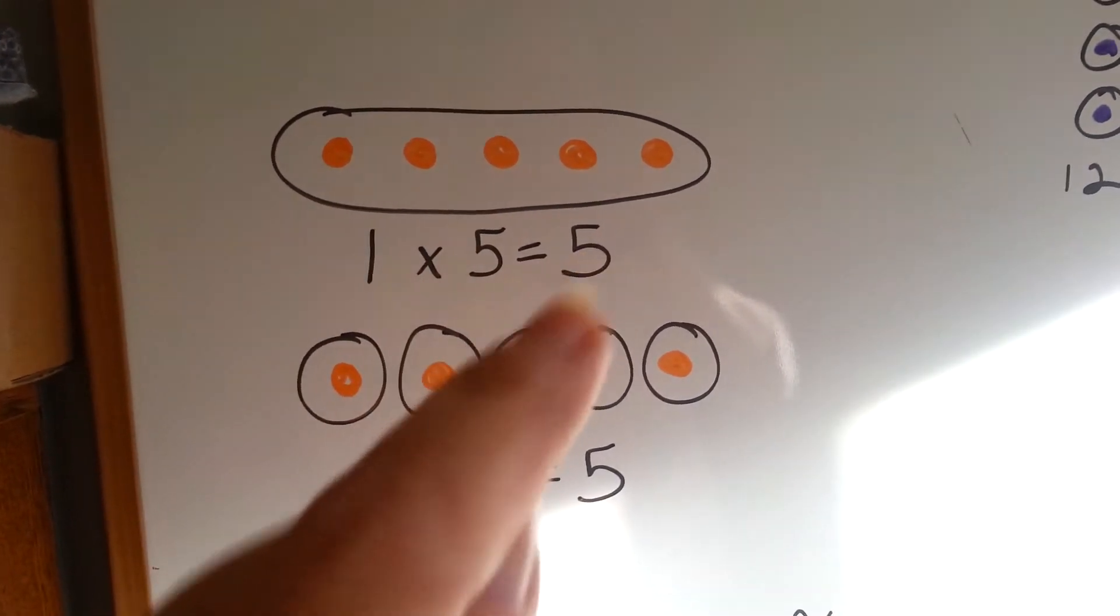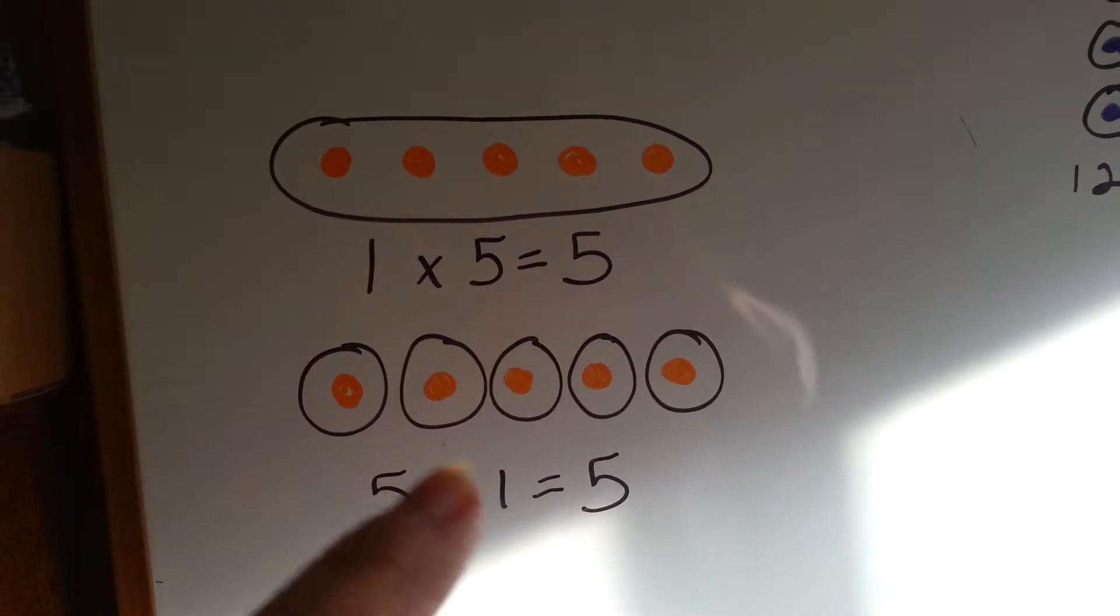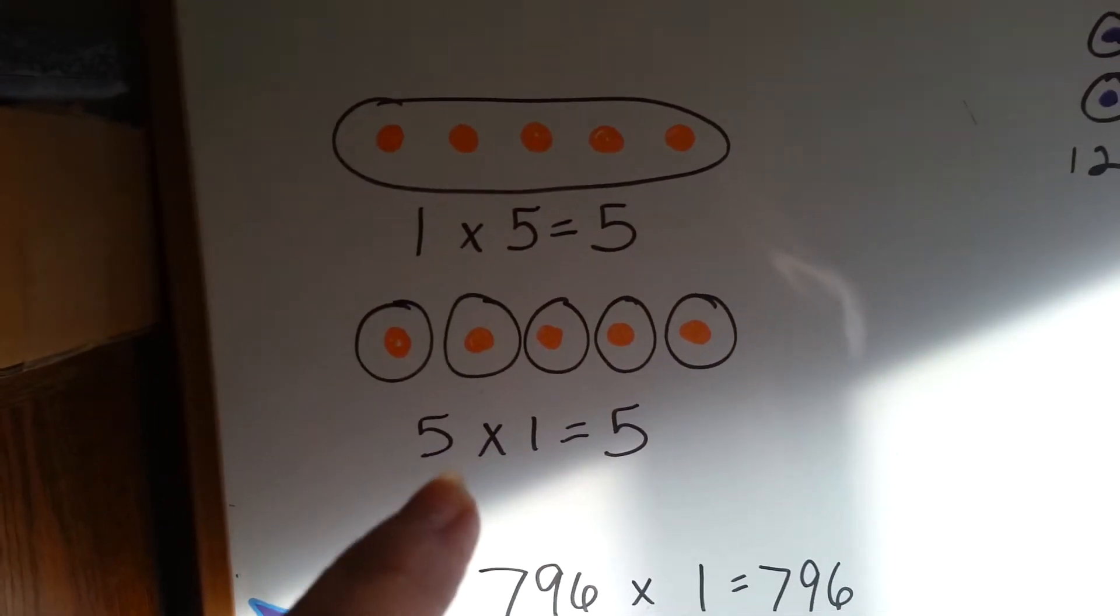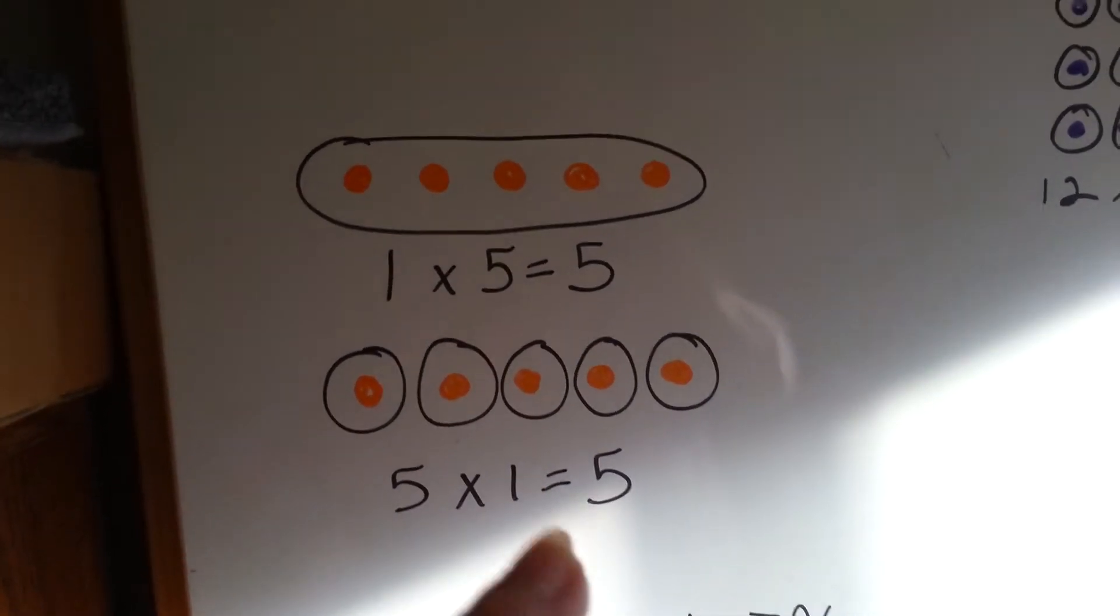One times five is five, and five times one is five. Any number multiplied by one stays that number.